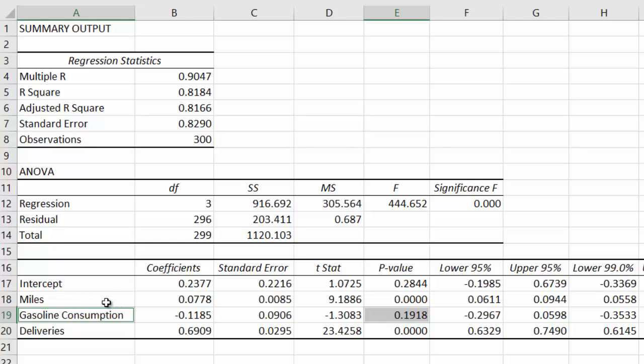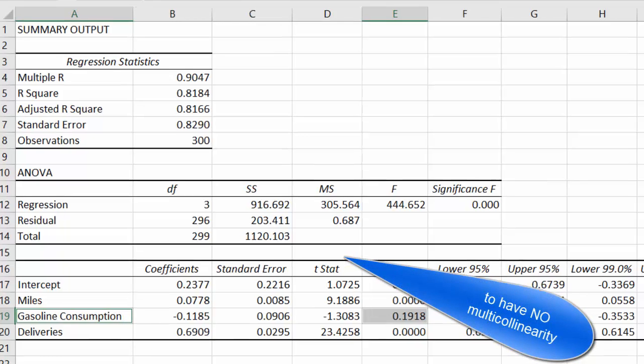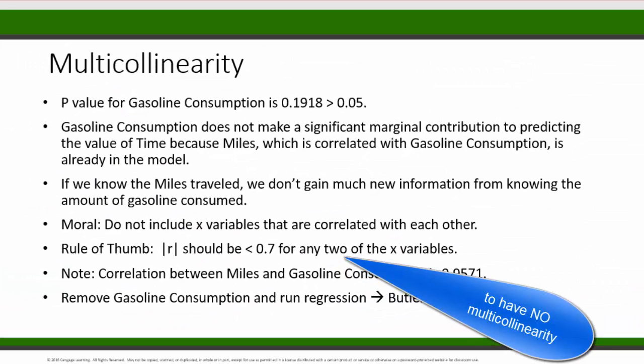Since miles is already there in the model, adding the gas consumption variable doesn't really give us much new information. So it doesn't really help us predict the travel time any better. An x variable that should be related to the y variable sometimes ends up being non-significant in a regression because of the presence of other x variables. When we have x variables that are correlated, like gasoline consumption and miles, we call it multicollinearity.